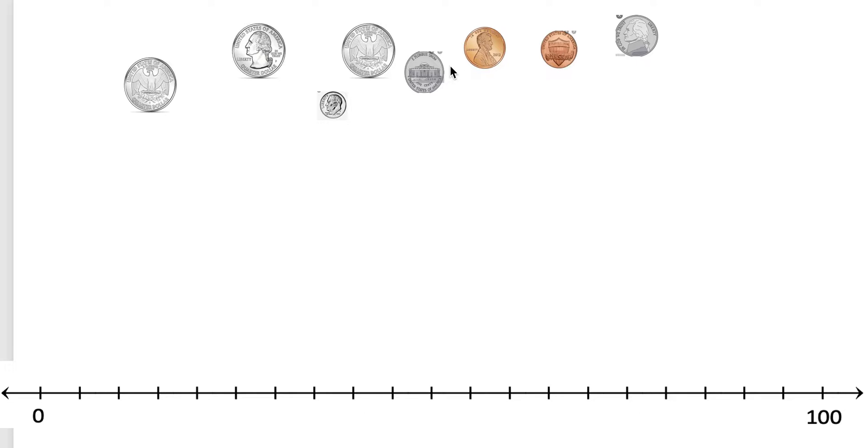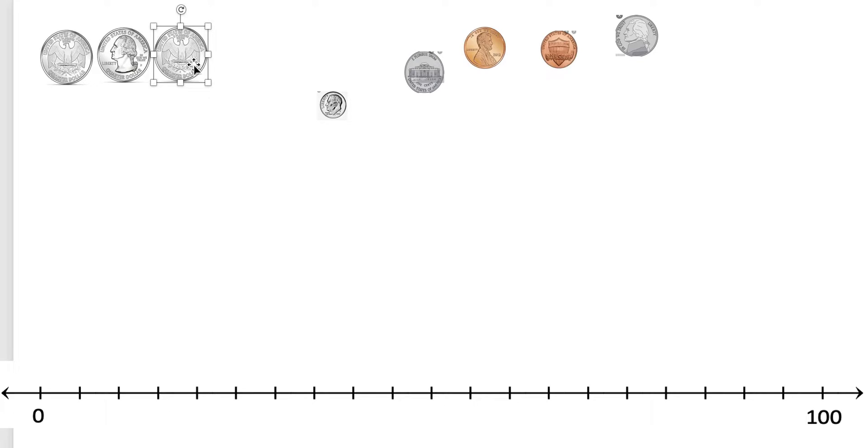The first thing I want to do to make counting this collection of coins easier is I want to put them in order of their value. I know that a quarter is worth 25 cents and that's the biggest coin, the coin that has the most value. So I'm going to line up all my quarters next to each other.